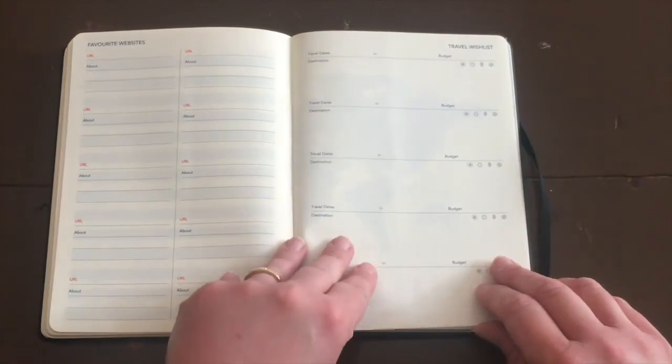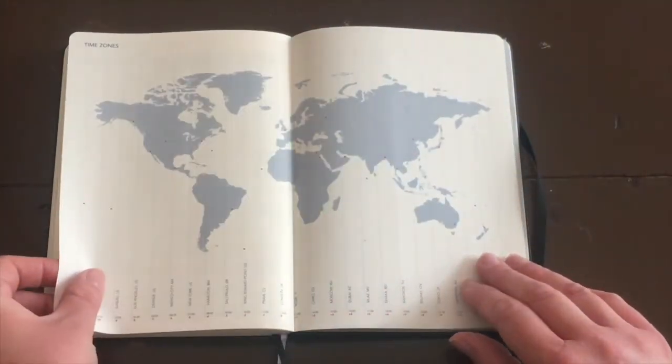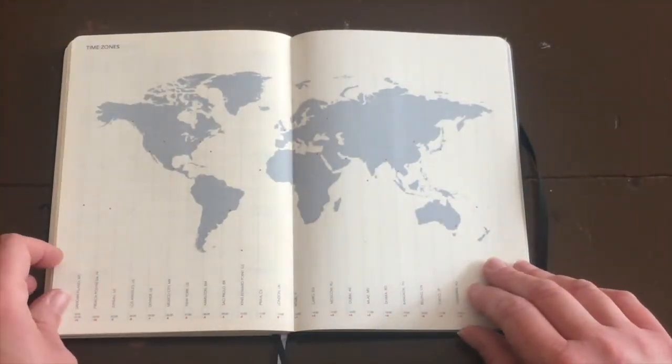Not to mention the expenses tracker which is really handy for mums. And then over the page, favorite websites, travel wish list, and then a lovely global map with different time zones on it. But my favorite part is easily this handy little pocket where you can put school notes, party invitations and stuff like that.